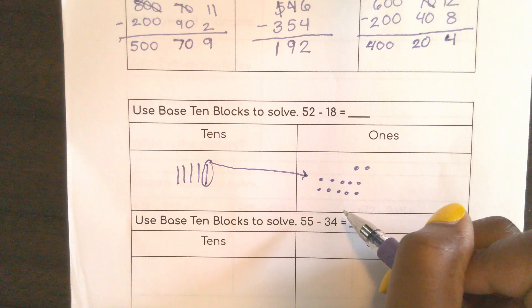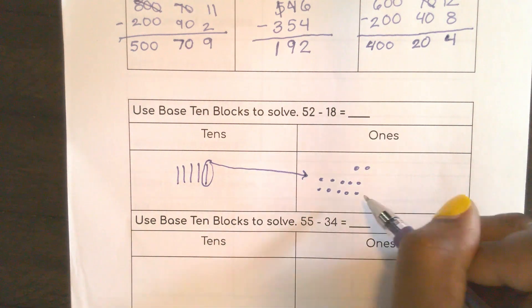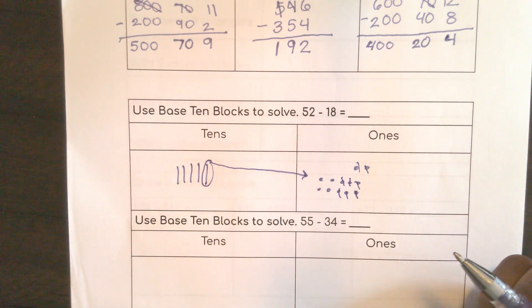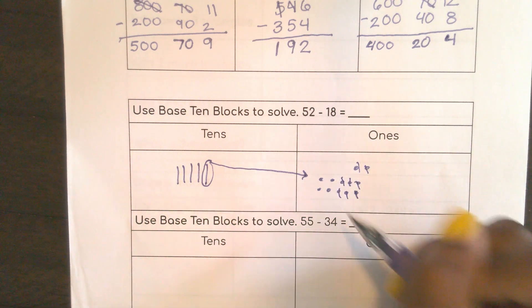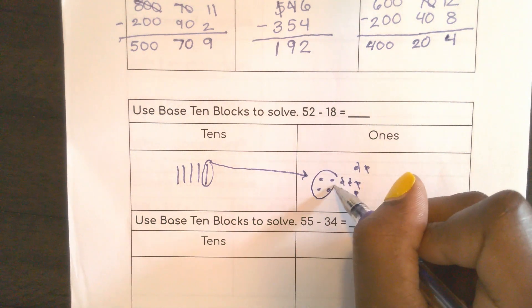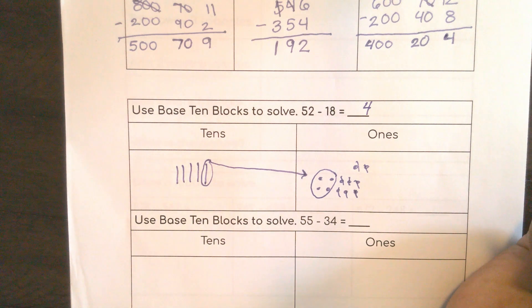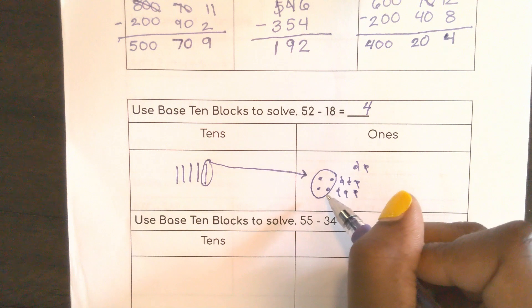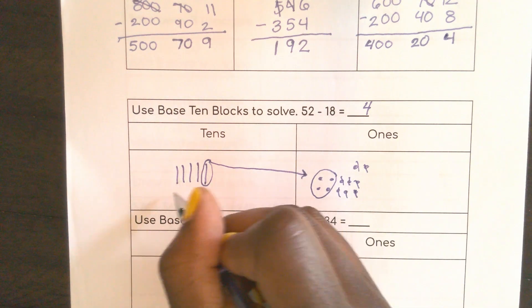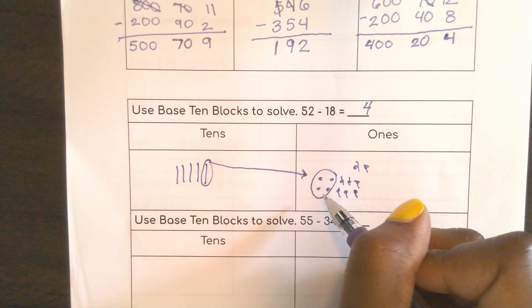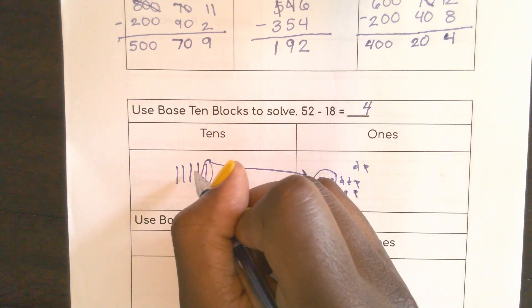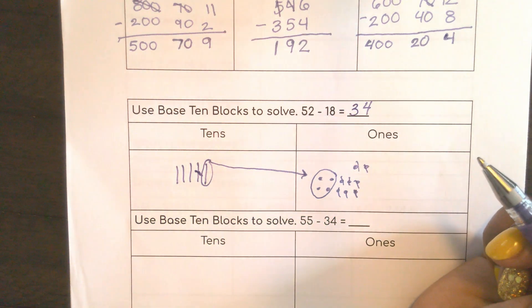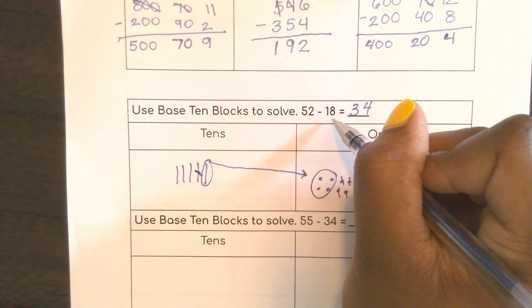Well if I have 12 ones, I can definitely take away 8. Here I go. 3, 4, 5, 6, 7, 8. So now I have 4 ones left. So I know that's going to be in my ones place. Now I want to take away one 10. This 10 has already been moved away. So I have 4 tens. I moved it over here to regroup. So if I take away one more, I would have 3 tens. So now I know 52 minus 18 is 34.